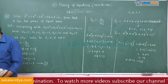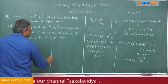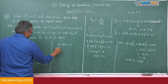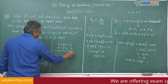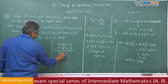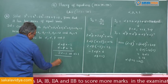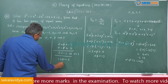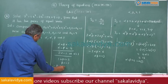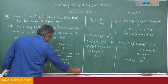Solving equations 1 and 2: alpha plus beta equals minus 2 and alpha minus beta equals 4. Adding: 2alpha equals 2, so alpha equals 1. Substituting back: 1 plus beta equals minus 2, so beta equals minus 3. Therefore, the roots are 1, 1, minus 3, minus 3.